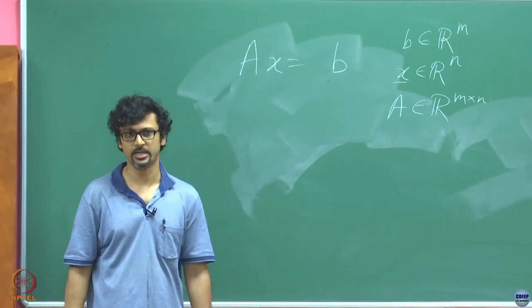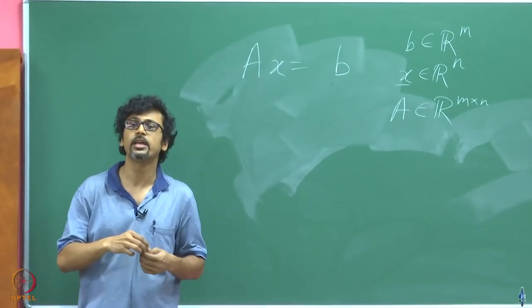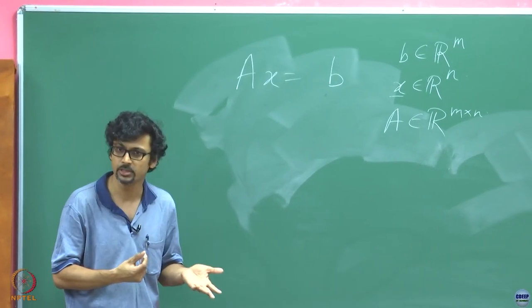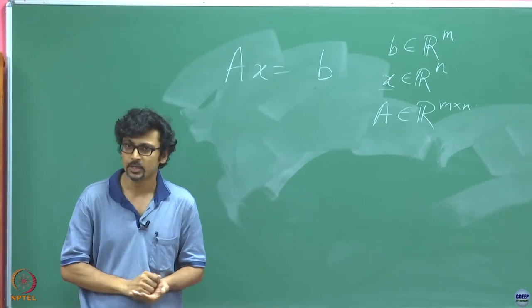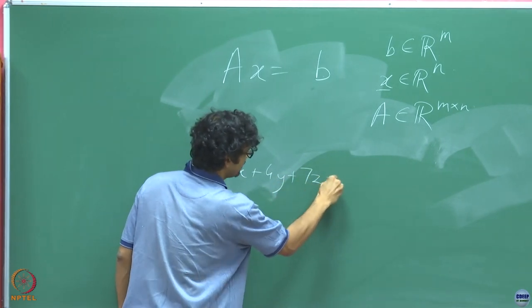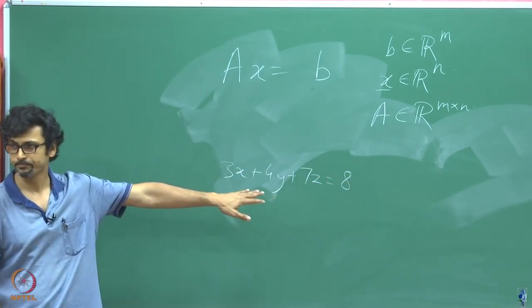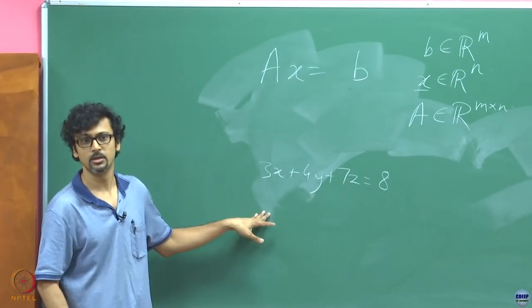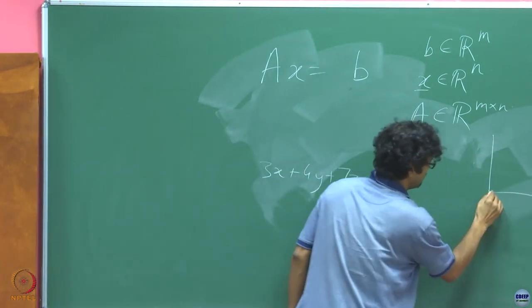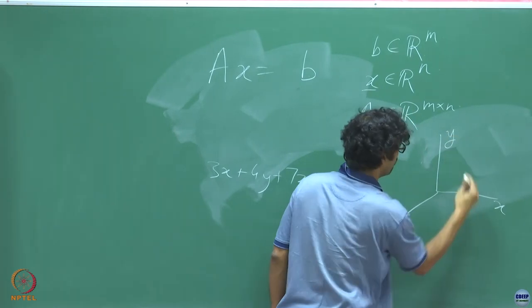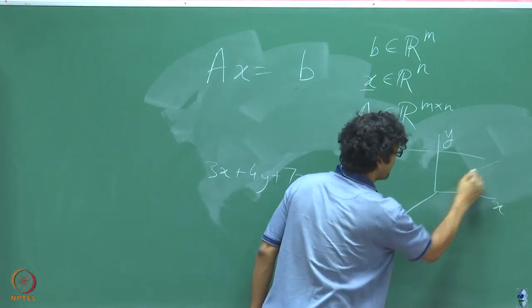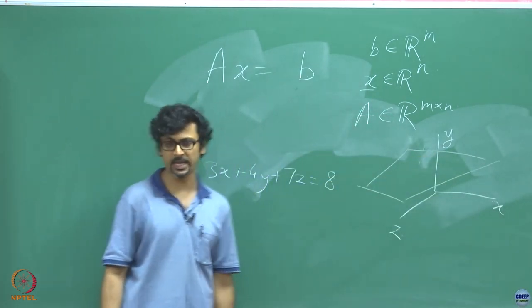Each equation is a constraint. Let us think geometrically, though that does not go beyond three dimensions. If I give you 3x + 4y + 7z = 8, what is this? It is a plane. If I ask you to solve this equation, geometrically it means I can sketch this plane in x-y-z space, and every point on this plane is a solution.